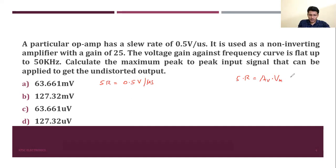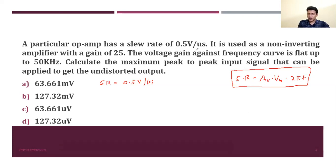The slew rate equation is: SR = AV × Vm × 2πf. The input signal is Vm sin(ωt), so the output is AV × Vm sin(ωt), and dV/dt gives the slew rate. Converting, slew rate = 0.5 V/µs = 0.5 × 10⁶ V/s = 10 raised to 5 volt per second.